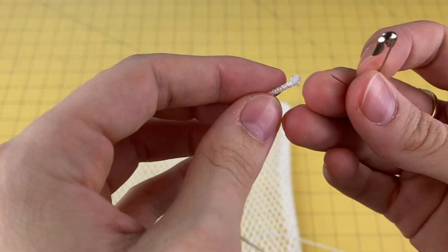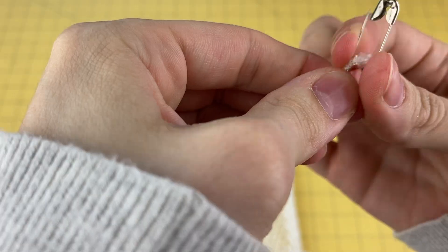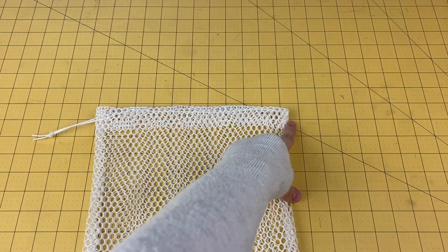Repeat this step again to thread the other piece of cording along the tunnel, but start from the opposite side of the bag this time.